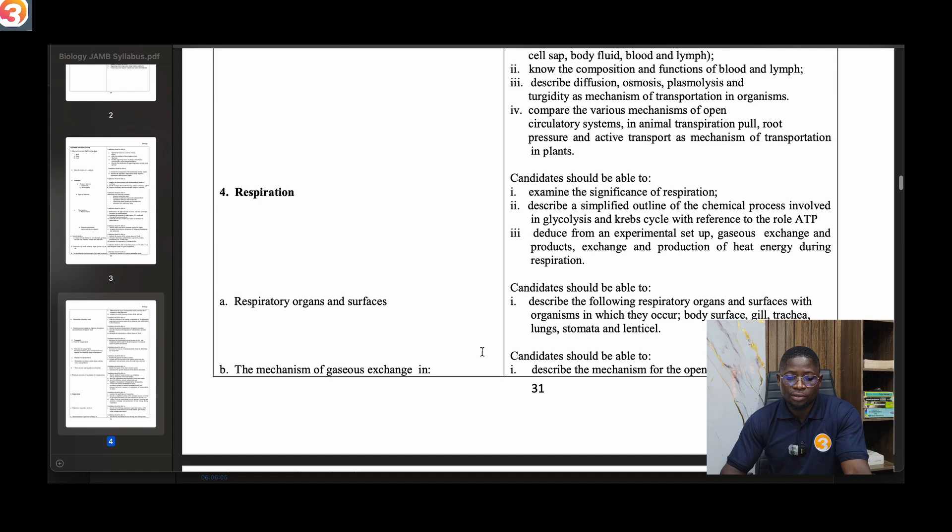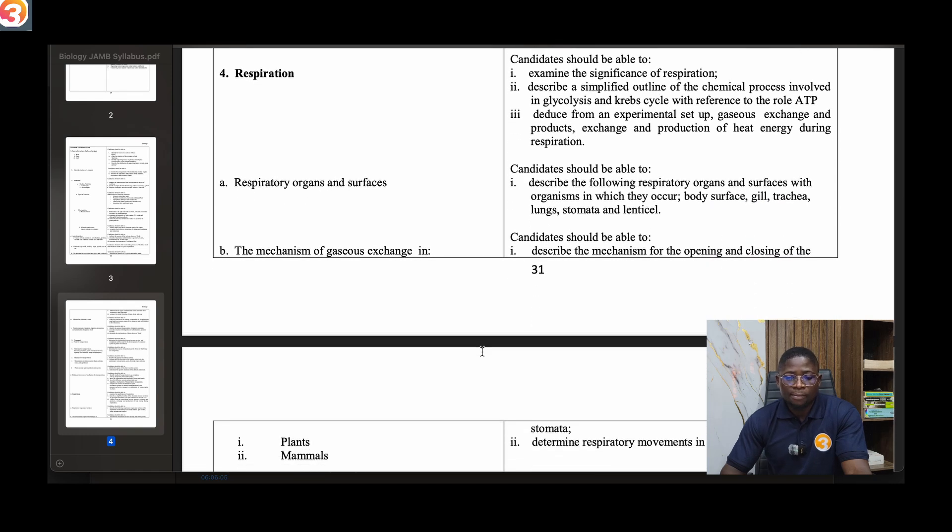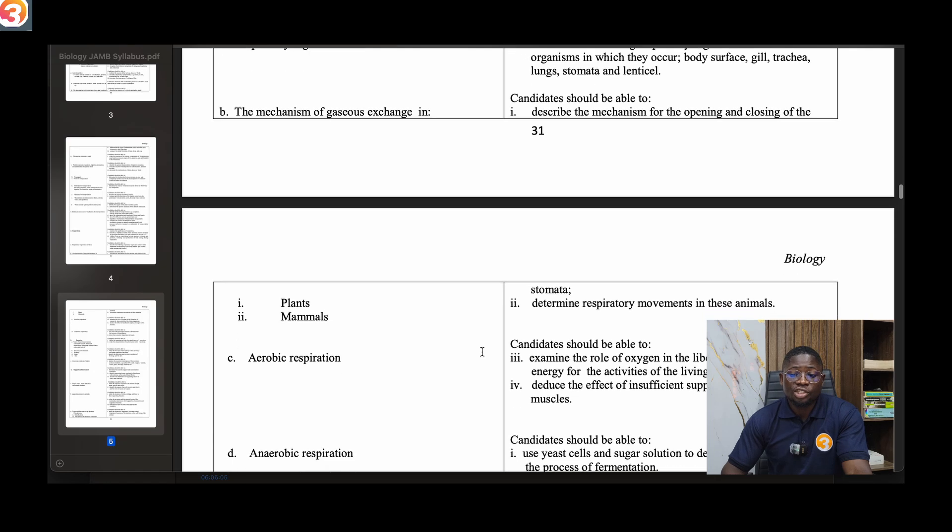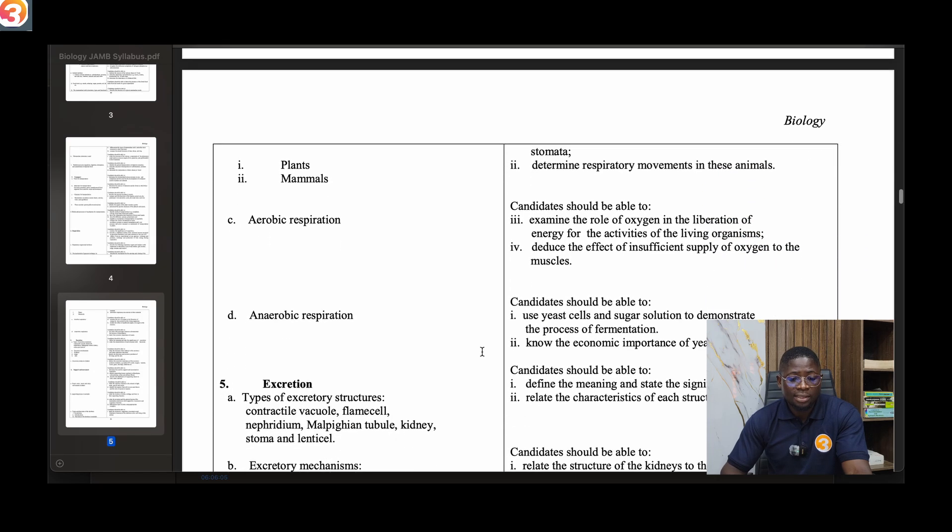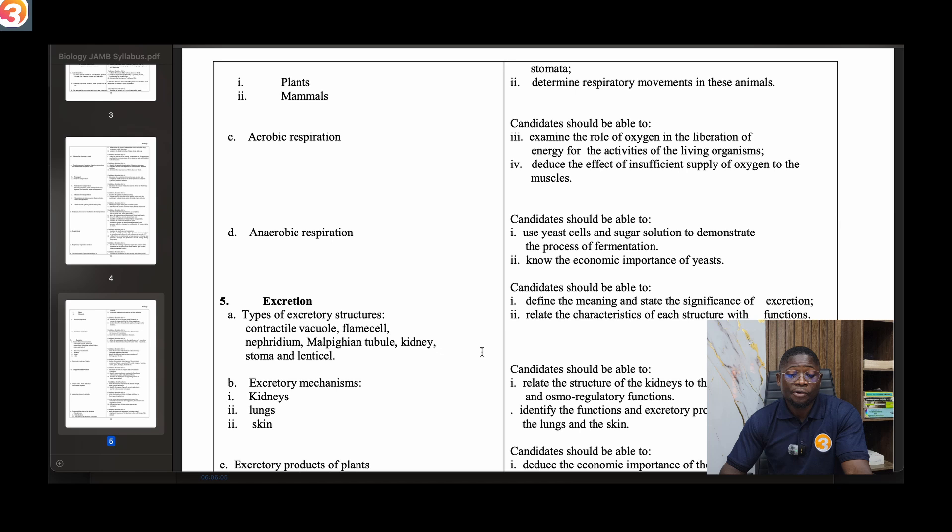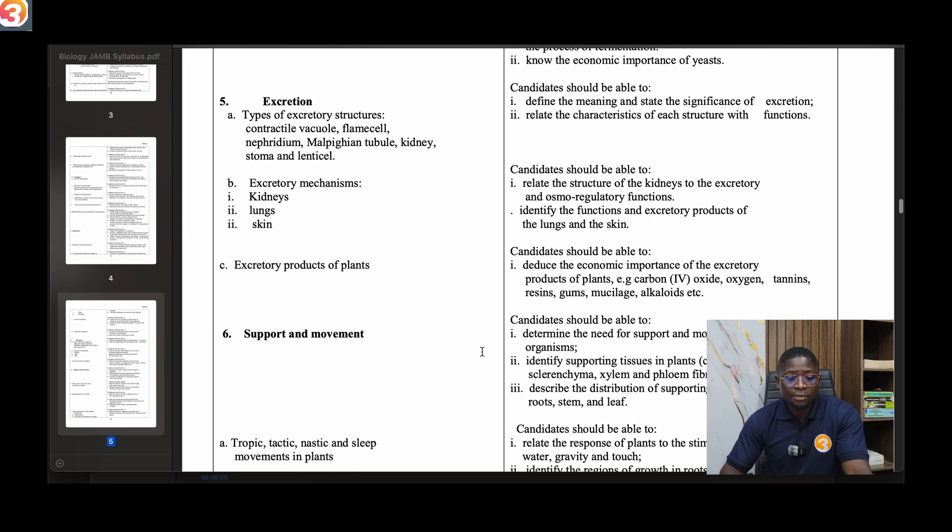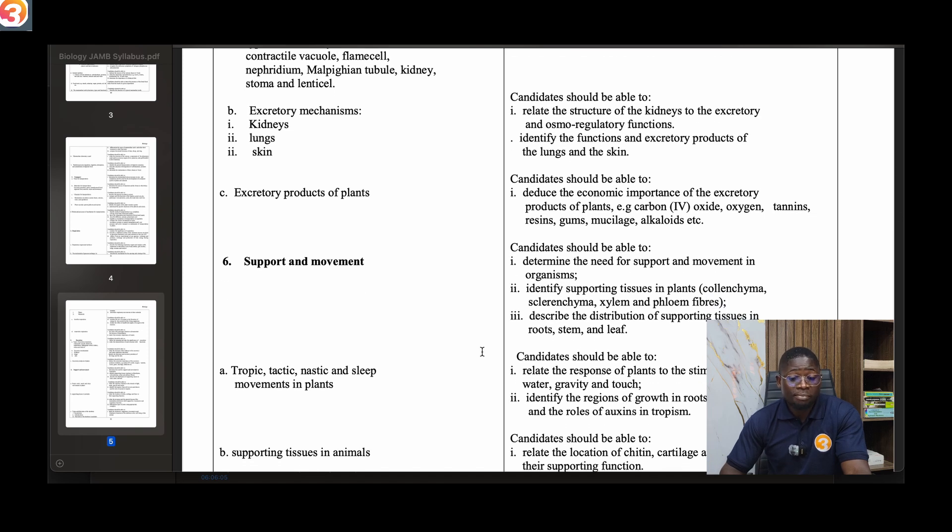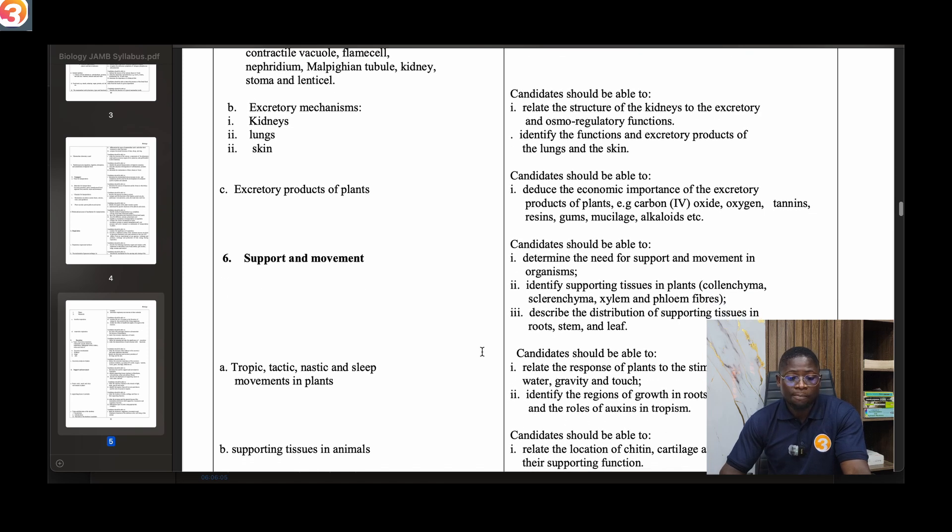Number four talks about respiration. On the right hand side, you'll see what you are going to focus your attention on - parts of the respiratory organs and surfaces, mechanism of gaseous exchange in plants and mammals, aerobic respiration and anaerobic respiration. Then the fifth topic is excretion - excretory structures like contractile vacuole, flame cells, nephridia, Malpighian tubules, kidneys in mammals, and lenticels.